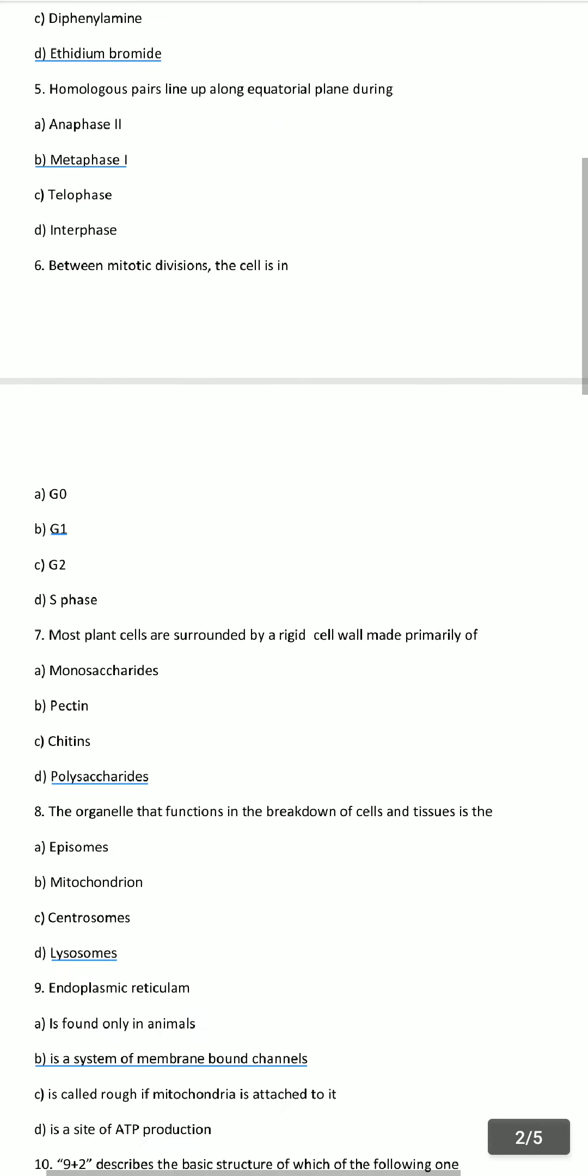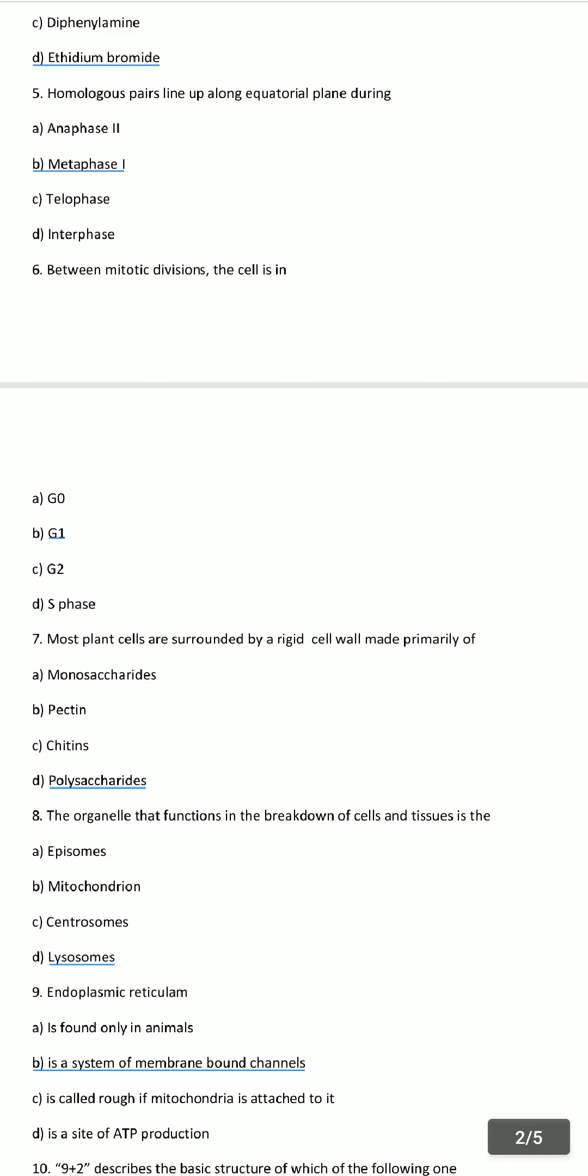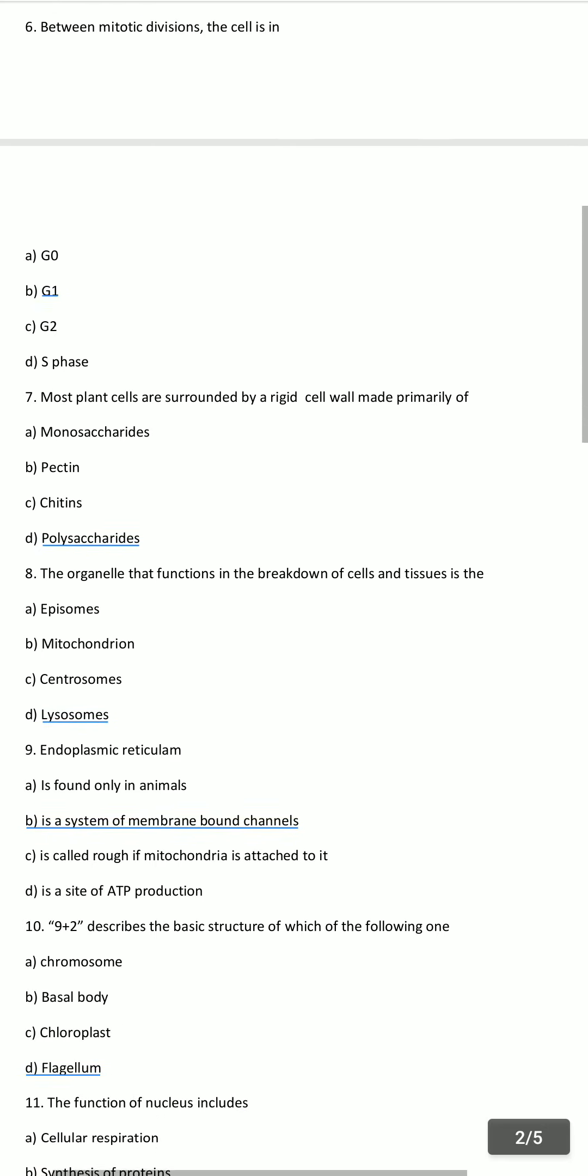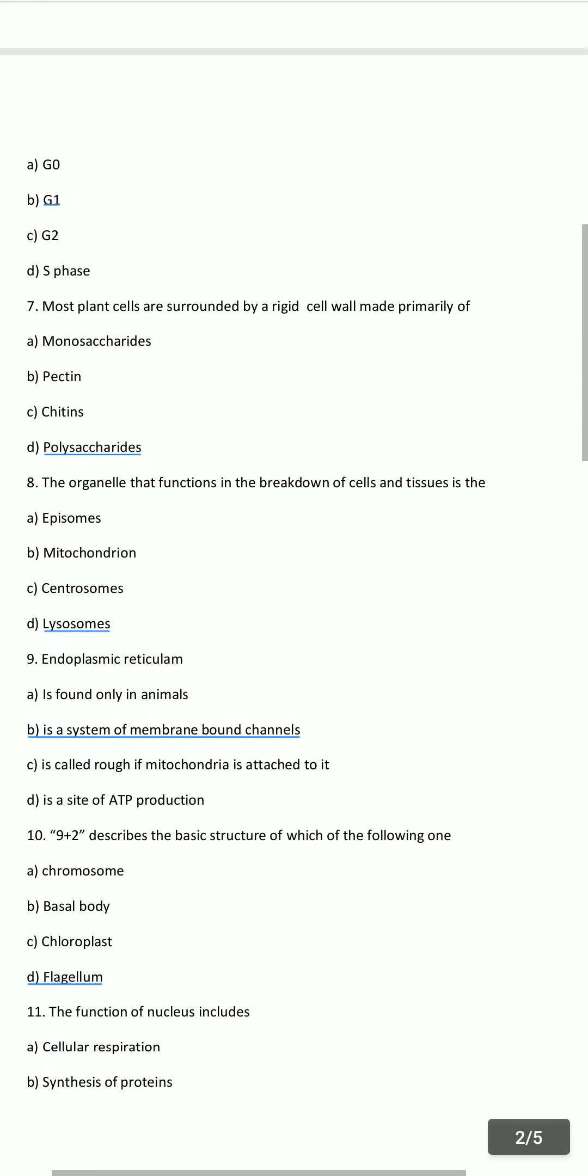Between mitotic divisions, the cell is in G1 phase. Most plant cells are surrounded by a rigid cell wall made primarily of polysaccharides.